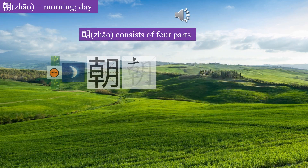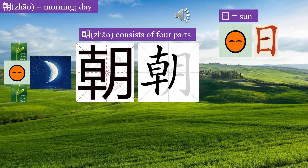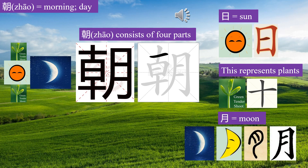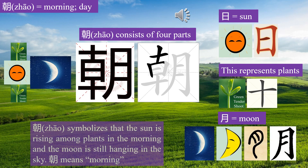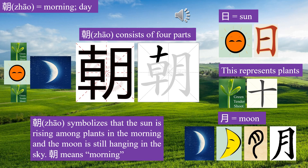Let's learn character Zhāo. Zhāo consists of four parts: Yú, Sūn, this represents plants, Yuè, Moon. Zhāo symbolizes that the sun is rising among plants in the morning and the moon is still hanging in the sky. Zhāo means morning.